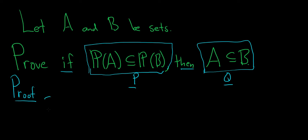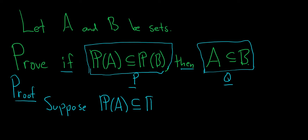So let's start by writing down our assumptions. Suppose that the power set of A is a subset of the power set of B. The power set of A is the set of all subsets of A, and the power set of B is the set of all subsets of B. Now we somehow have to show that A is a subset of B.